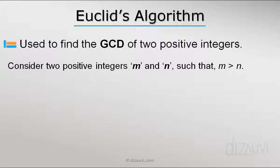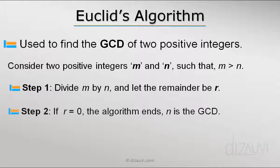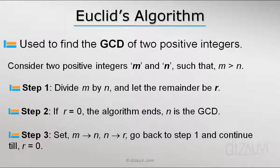Let's say there are two positive numbers m and n. Now to find the GCD of these two numbers, we first divide m by n and let's say that the remainder is r. If this remainder r is zero, we are done and the value of GCD is n. But if r is not zero, we set m equal to n and n equal to r, and then start with step 1.